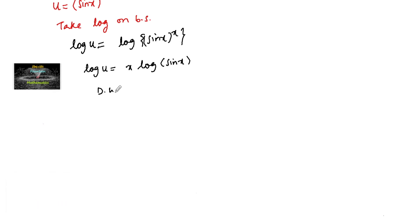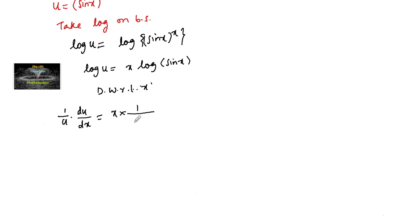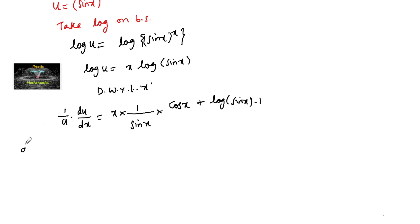Differentiating both sides with respect to x, we have (1/u) · du/dx = x · (1/sin x) · cos x + log(sin x) · 1, applying the product rule on the right-hand side, where the derivative of sin x is cos x.